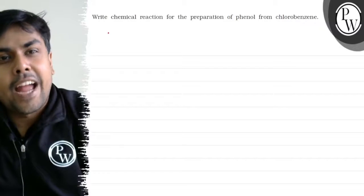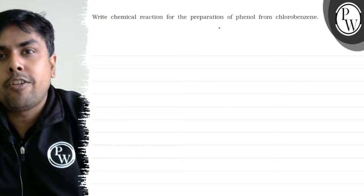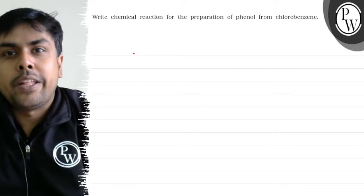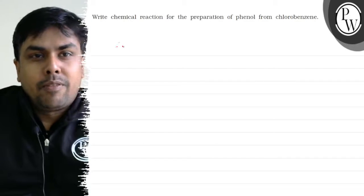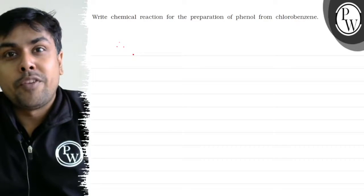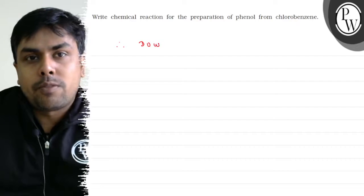Hello, let's read the question. The question is: Write chemical reaction for the preparation of phenol from chlorobenzene. Let's make phenol from chlorobenzene. Basically, phenol is synthesized from chlorobenzene through a very important process and that process is referred as Down's method.